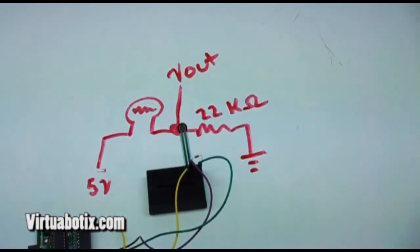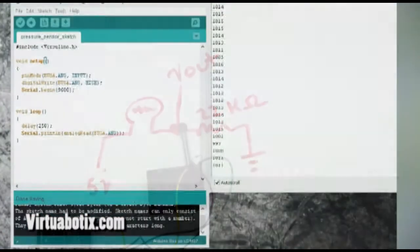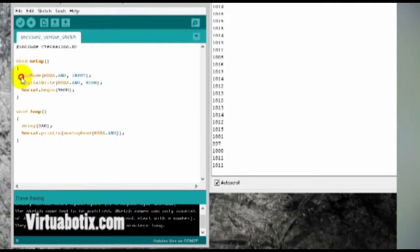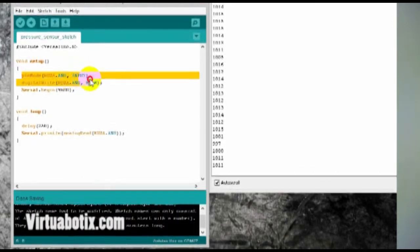So here we have the sketch that we're working on to run this. So first we want to include the Versalino library. And then in setup we are going to change pin mode for bus A analog 0 to input. We're going to digital write bus A analog 0 to high which turns on the pull up resistor. Then we are going to set up our serial at 9600 baud.